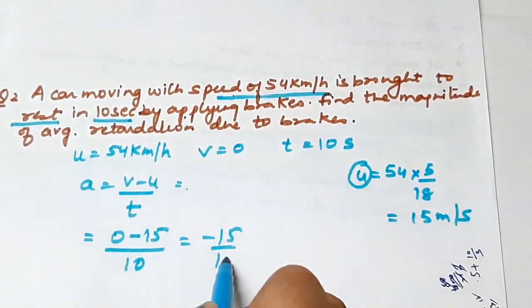Moving on to the next numerical on retardation: a car moving with a speed of 54 km per hour is brought to rest. The initial velocity is 54 km per hour and final velocity is zero, in 10 seconds. So u equals 54 km per hour, v is 0, and time is 10 seconds.